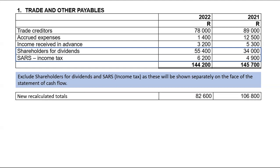These are my new balances. Trade and other payables have decreased, resulting in a cash outflow. That is because when you owe people — last year we owed them $106,800, this year we are only owing them $82,600. The fact that we owe them a lesser amount means, cash-wise, that you have paid. When you pay your creditors, that results in a cash outflow. The cash outflow will be the difference between those two balances.